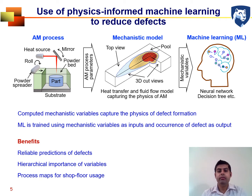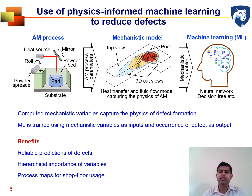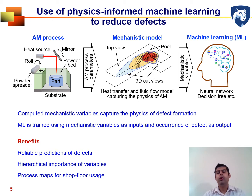There are three unmistakable benefits of this process. First, prediction of defect formation is much more reliable because we are using variables that capture the physics of the process. Second, it provides a hierarchical importance of the variables that affect defect formation, giving engineers guidance on which variables to tune to control defects. Third, based on the results, we can create process maps that can be readily used on the shop floor to identify the process parameters needed to control these defects.